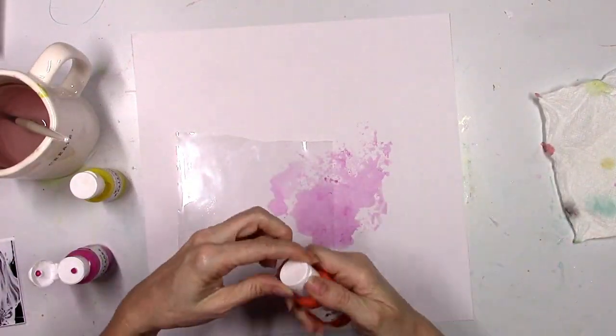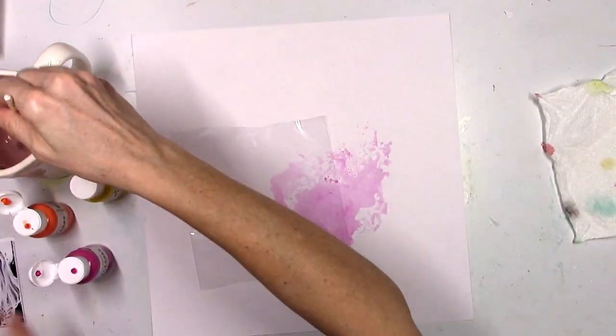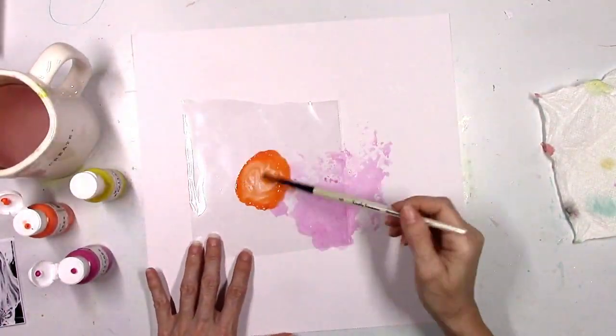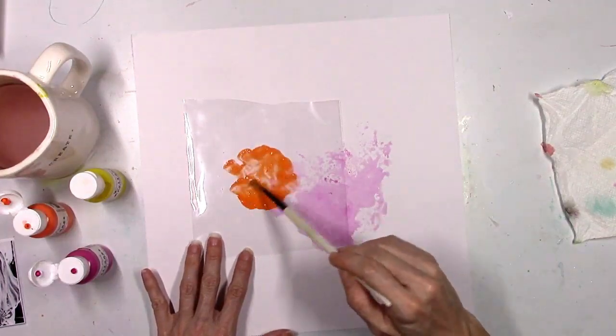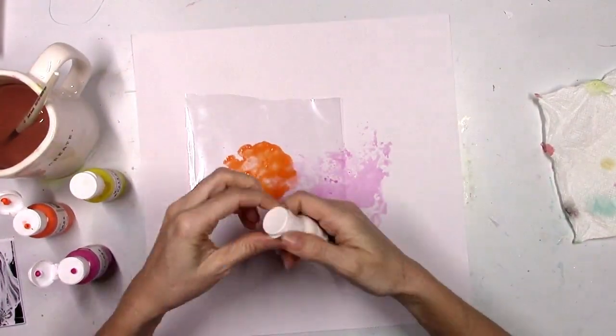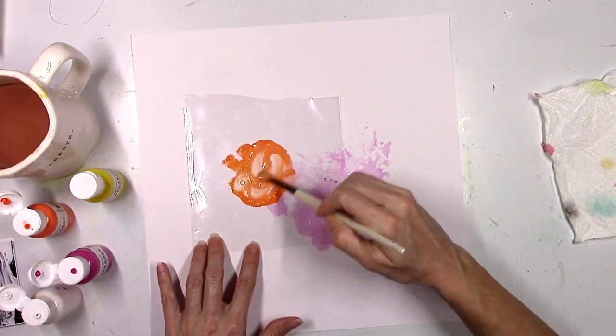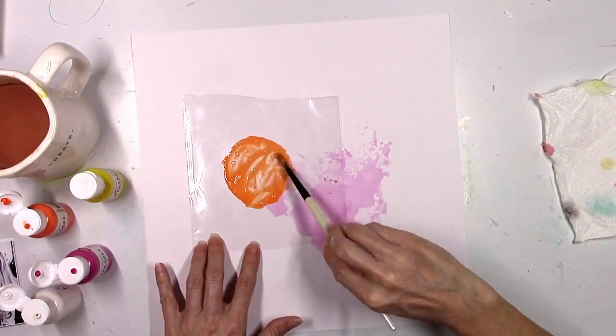I'm going to layer some of the orange on top of that. This is called Orange You Glad, and as you can see, these are very bright and bold colors. I'm going to add a little bit of the white, that's called Three Sheets to the Wind, just to soften up that orange a little bit.